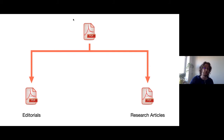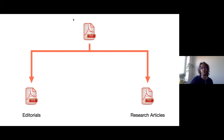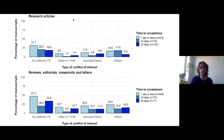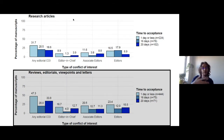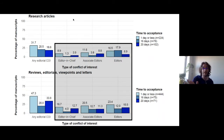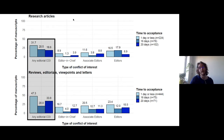We categorized papers into viewpoint or tutorial papers — for which it's probably not really an issue to have a conflict of interest with the editorial team, since these are often invited papers written by editors themselves — versus research articles, where you'd expect less conflict of interest. Here are the results: at the top are research articles only, at the bottom we have reviews, editorials, viewpoints, and letters gathered together. We separate review time into one day or less, 16 days, and 20 days, and look at three types of conflict of interest: editor-in-chief, associate editors, or editors, with an aggregated picture.